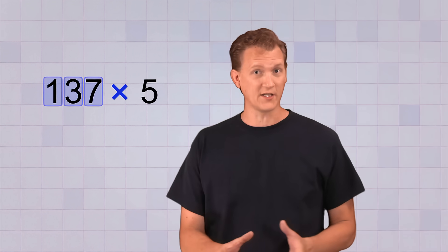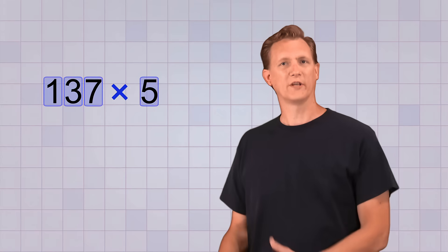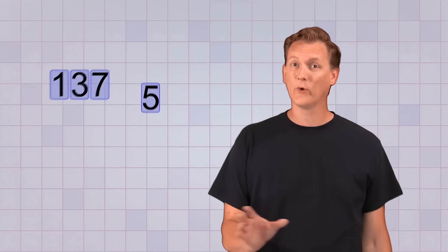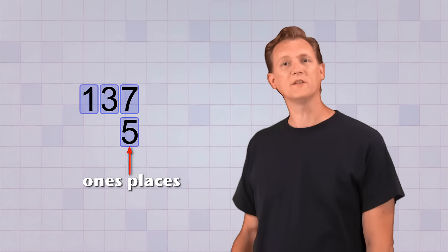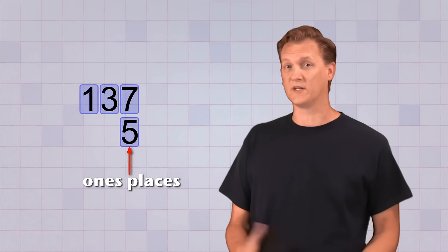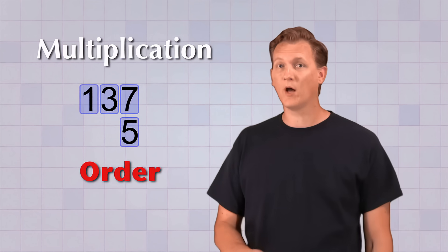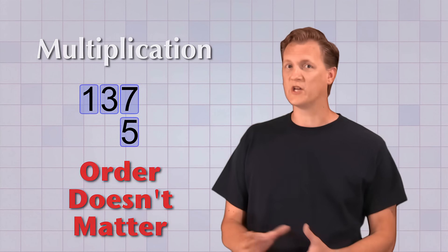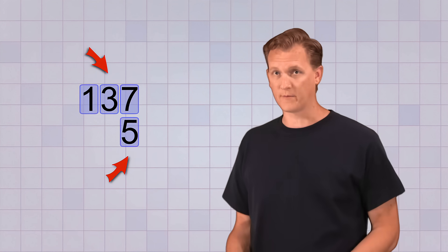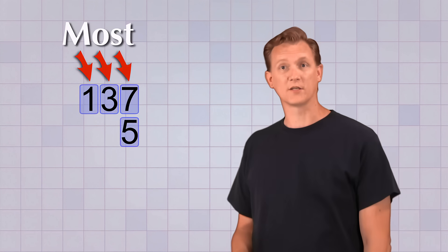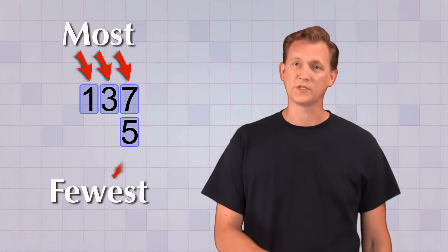Let's try 137 × 5. This is a 3-digit number times a 1-digit number. When you're given a problem like this, you need to rewrite it in stacked form with the ones places lined up. It's always best to put the number with the most digits on the top and the one with the fewest digits on the bottom.